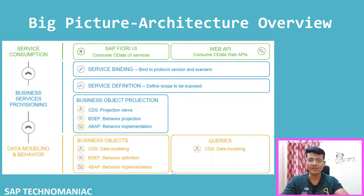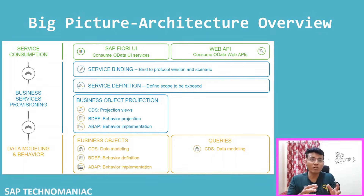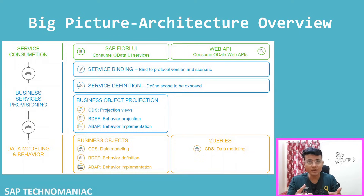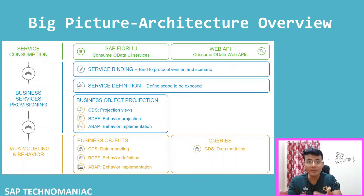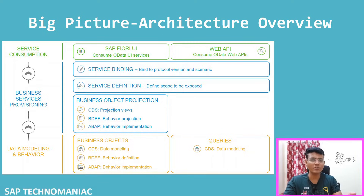The second part is business service provisioning, where we define which part of the data model you want to expose, what protocol to use - whether OData v4 or v2 - and for what purpose: consuming as a web API or for a Fiori application. The third part is service consumption, where we actually consume that service either as a Fiori application or as a web API.